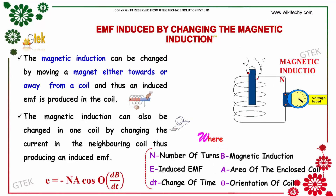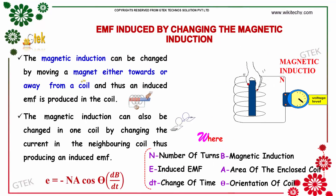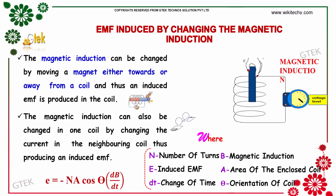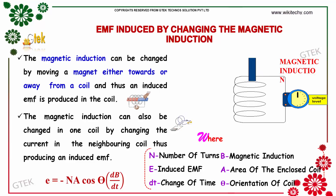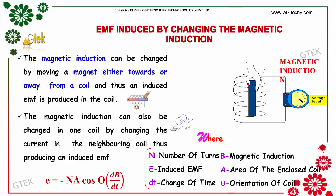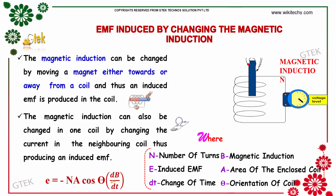The magnetic induction can be changed by moving a magnet either towards or away from the coil, and thus an induced EMF is produced in the coil. Or the magnetic induction in one coil can also be changed by changing the current in the neighboring coil, thus producing an induced EMF. So E is equal to minus N·A·cos(theta) into dB by dt.